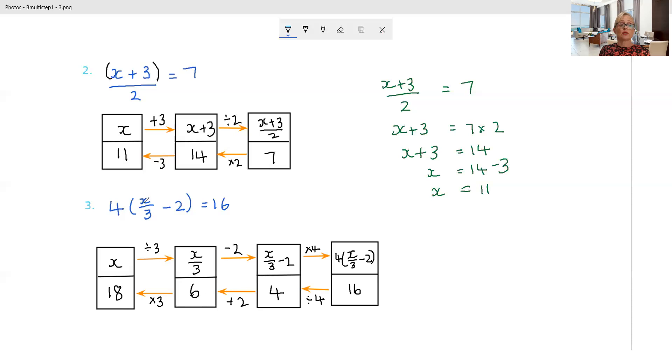Let's check, does that work? 18 divided by 3 is 6. 6 minus 2 is 4. 4 times 4, yes, is 16. Let's set it out the normal way.